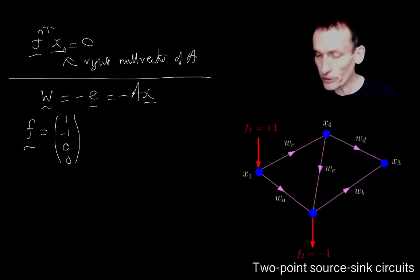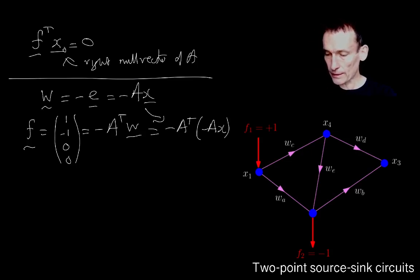I'm using one, two, three, four elements to denote nodes one, two, three, four in an obvious way. And this, of course, is minus A transpose W. That's what we mean by the divergence. And we're setting it to be one minus one, zero, zero. And of course, we can then use this to deduce that minus A transpose minus AX is equal to the F.